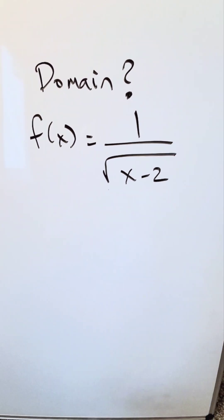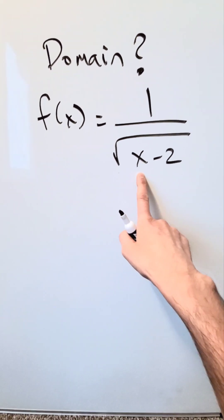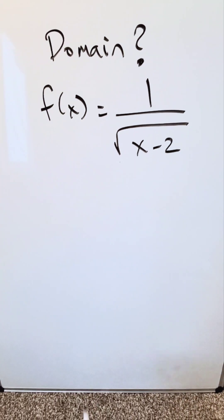Anytime you have a rational function where the variable is in the denominator and within a square root, you want to avoid two scenarios.